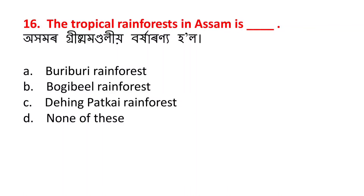The tropical rainforest in Assam - ahamor grisma mondoliya barharay. The answer is C - Dihing Patkai Rainforest, which is now Dihing Patkai National Park.